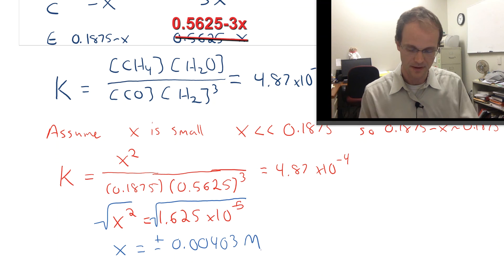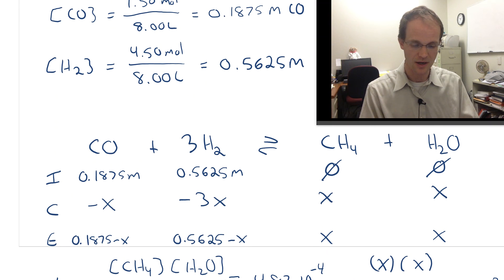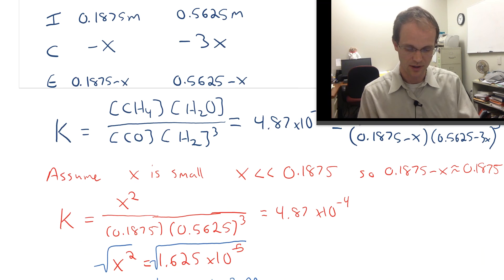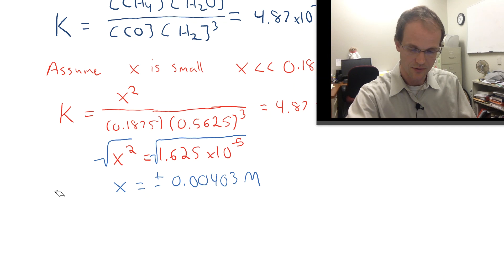Plus or minus because we get the square root, which one is it? It's got to be plus in this case because we said the reaction was running to the right and that's all it could do, so it's got to be a plus. So we now know the value of X here. We know that the concentration of CH4 and the concentration of H2O was equal to X, and that's going to be 0.00403 molar.